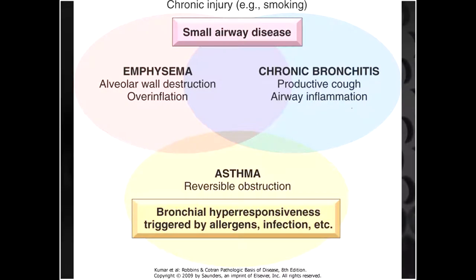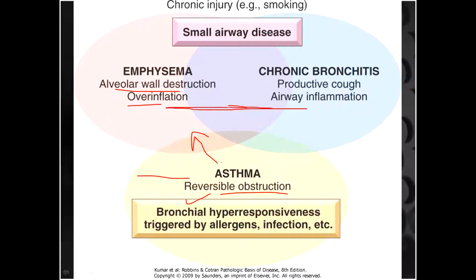In asthma there is reversible obstruction, but in some cases of asthma because of bronchial hyperresponsiveness there can be destruction later on, resulting in some features of emphysema — alveolar wall destruction. In chronic bronchitis there is productive cough and airway inflammation. There is much overlapping between emphysema and chronic bronchitis, both termed COPD. The main reason for all three conditions is basically smoking — so the message today is avoid smoking and avoid air pollution.